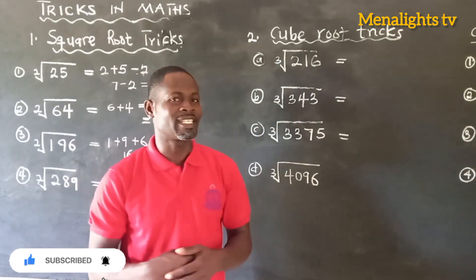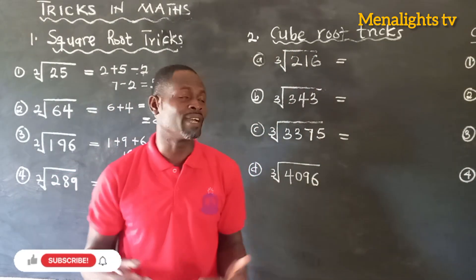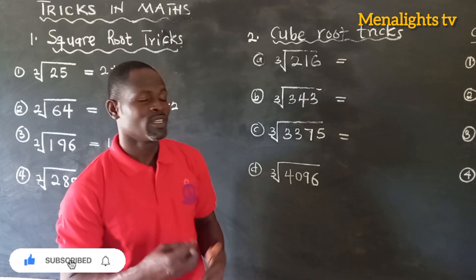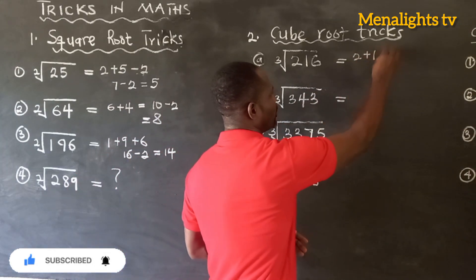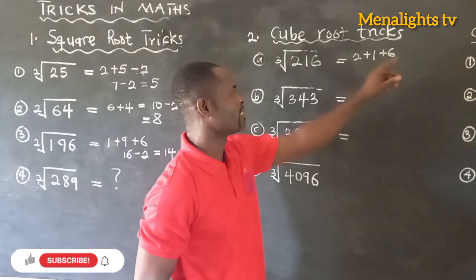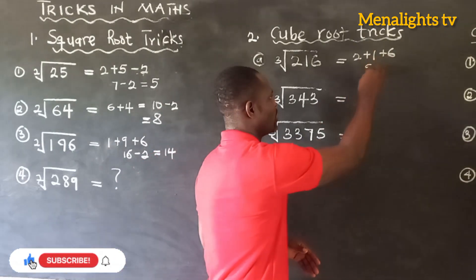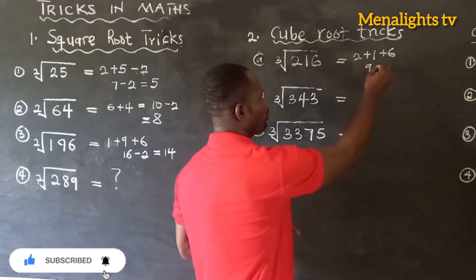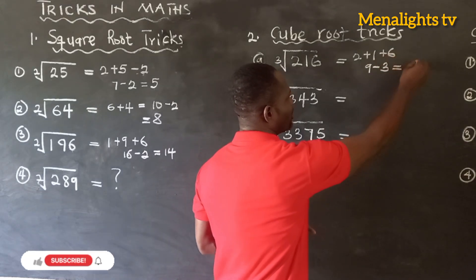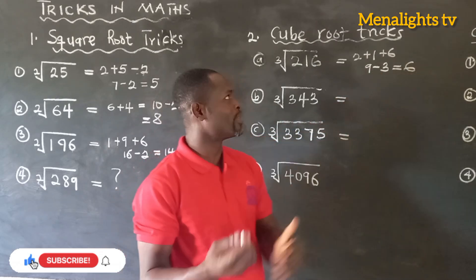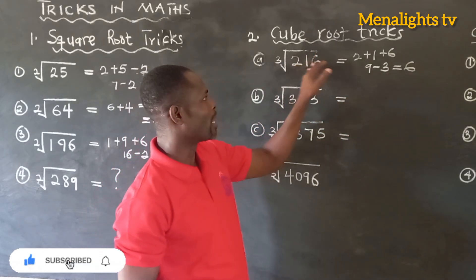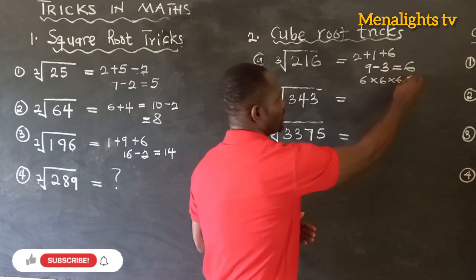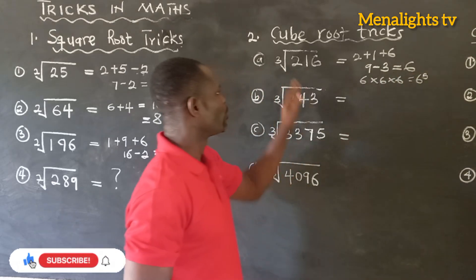The cube root of 216 — which means which number multiplied by itself 3 times gives you 216? So we add 2 plus 1 plus 6, which gives us 9. We then deduct 3 from it — 9 minus 3 gives us 6. The cube root of 216 is 6, meaning 6 times 6 times 6 equals 216.